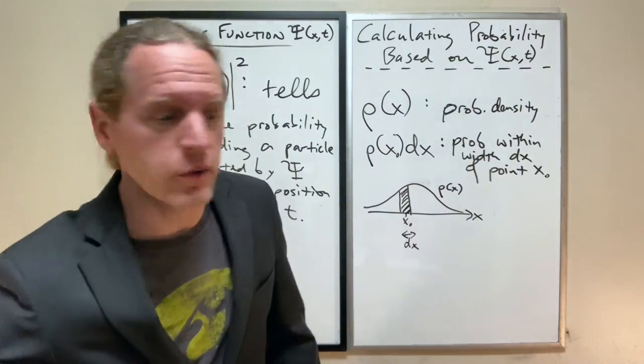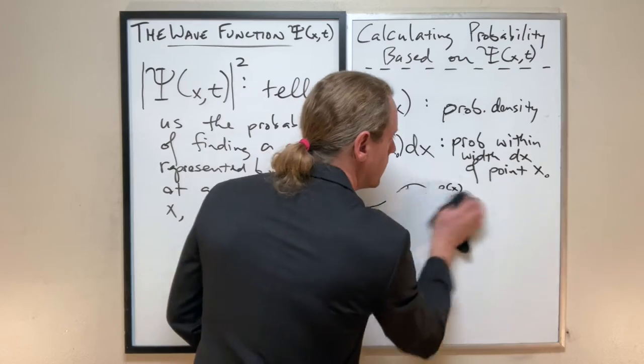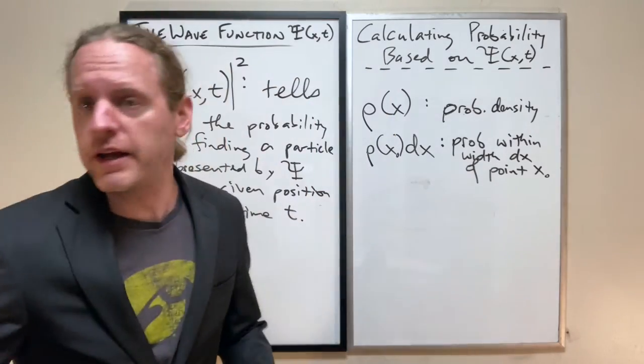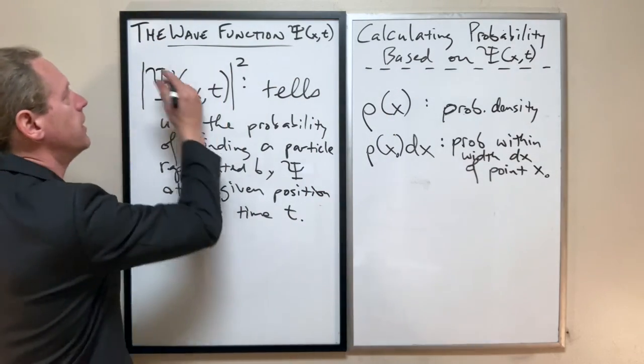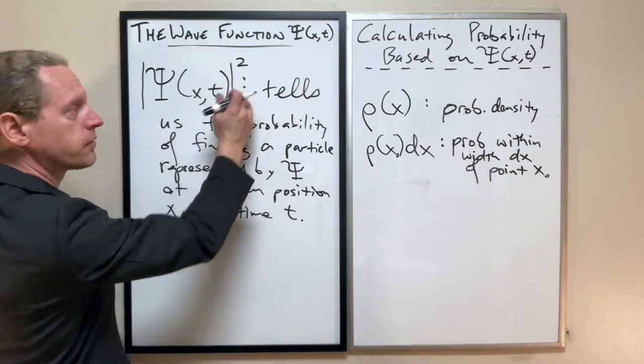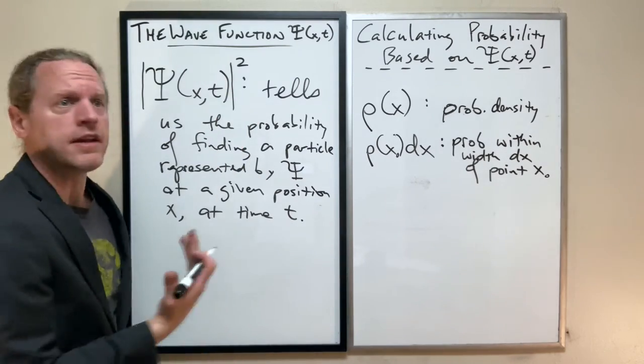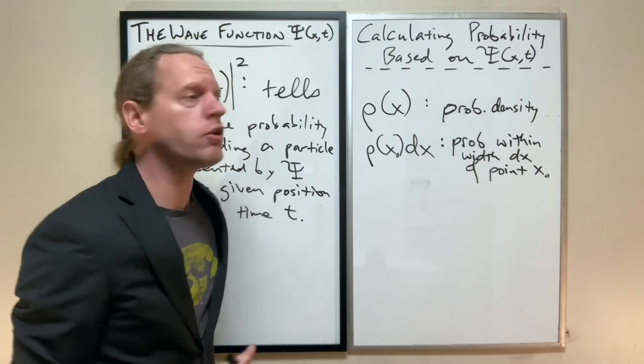And the easy way of doing that is, I'm going to erase this here, the easy way of doing that now is because we had said that it's psi squared that tells us the probability. That's exactly what we can set equal to rho.